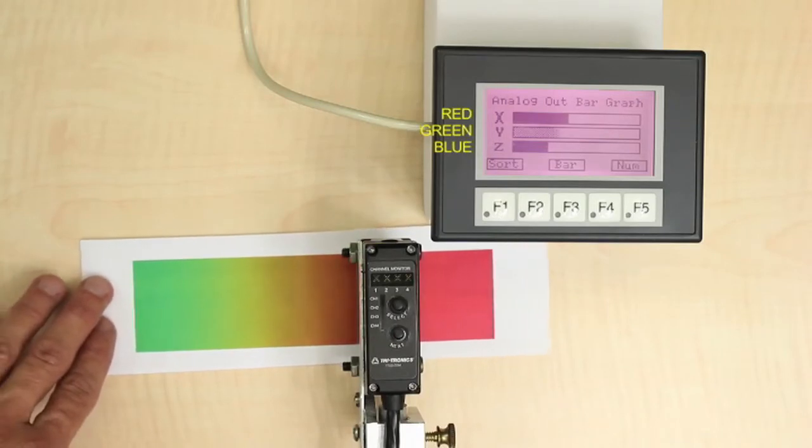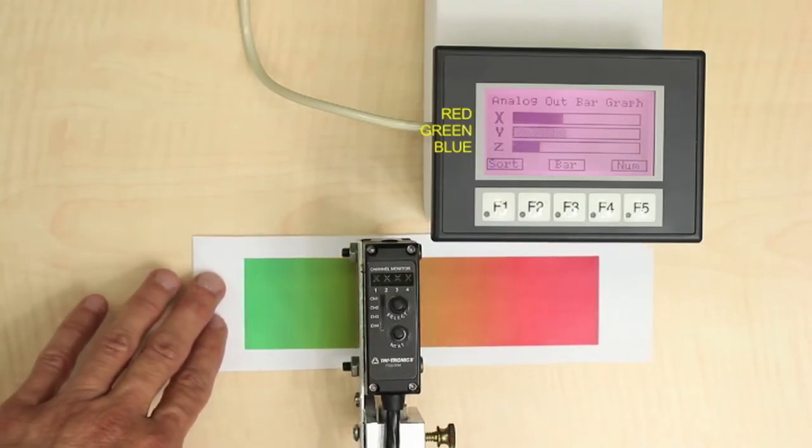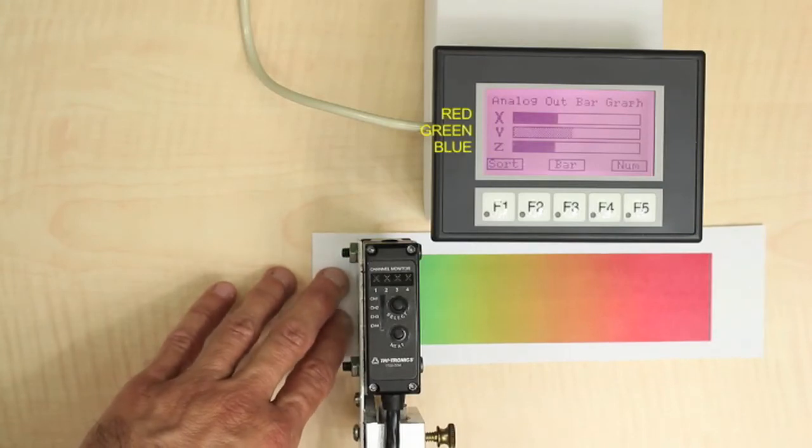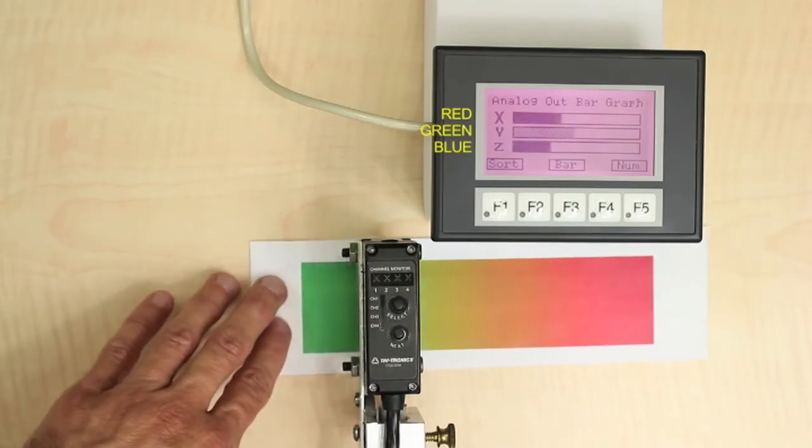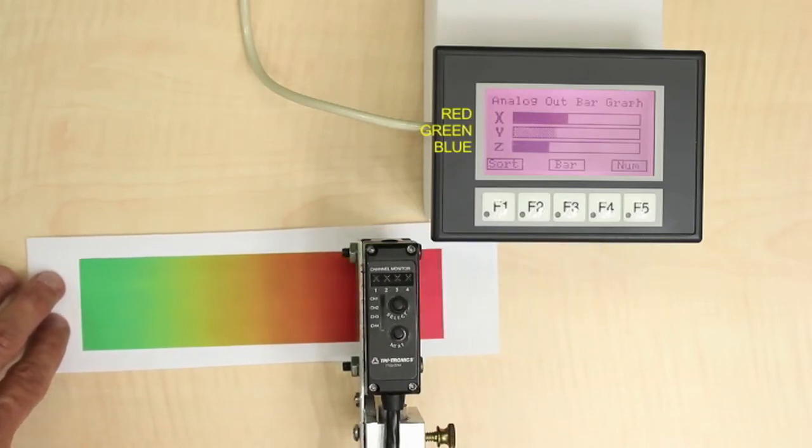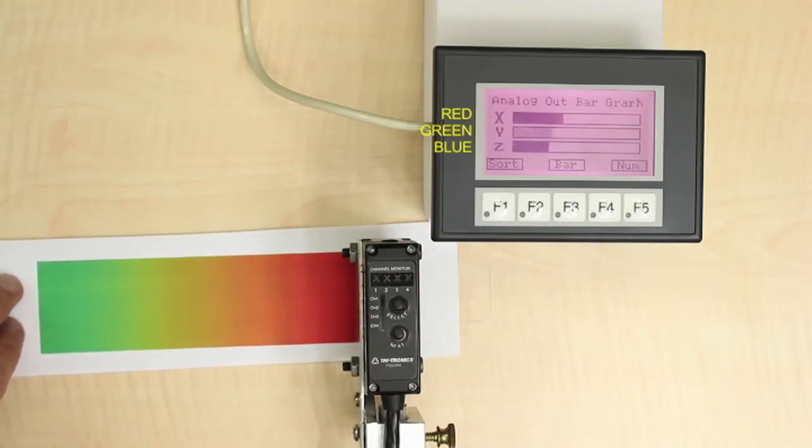Note that as we move from red to green, the RGB distribution shows a shift from red to green. We can use this shift to determine when the process is complete, or to gauge its progress. Note it is not necessary to use all three outputs if the signal change in just one output will give you the indication you need for your application.